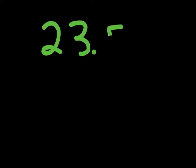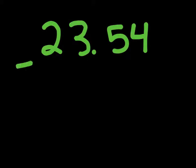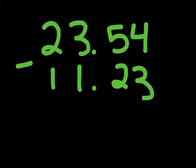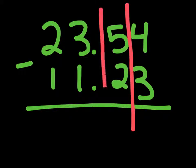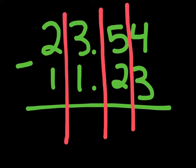So let's take 223.54 and let's subtract 11.23. Let's do what we did with regular subtraction — make our columns and subtract.